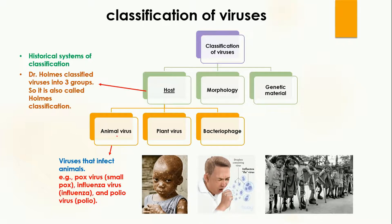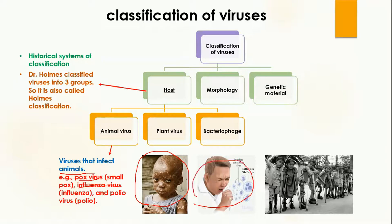Animal virus, as the name indicates, infects animals. Any virus which causes disease in animals is known as an animal virus. Examples include pox virus, which causes smallpox; influenza virus, which causes influenza; and polio virus, which causes polio.